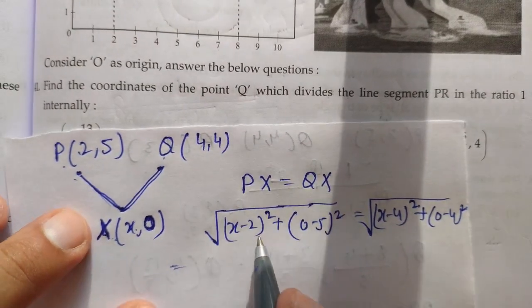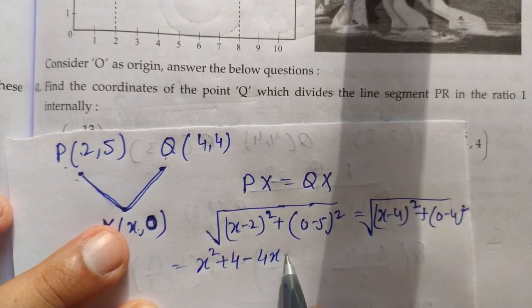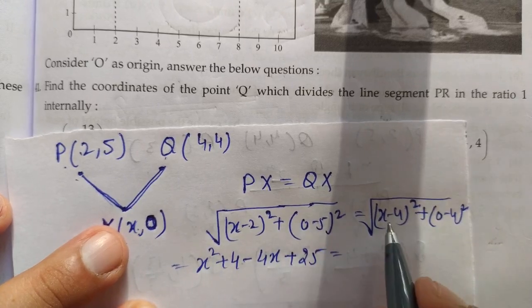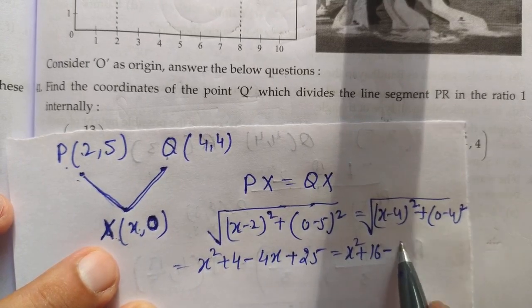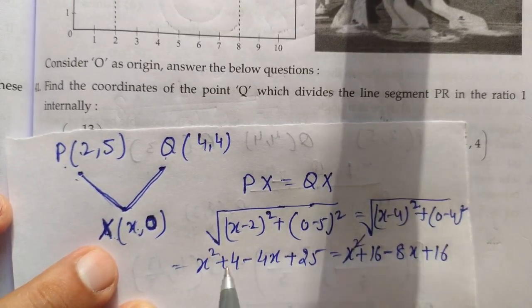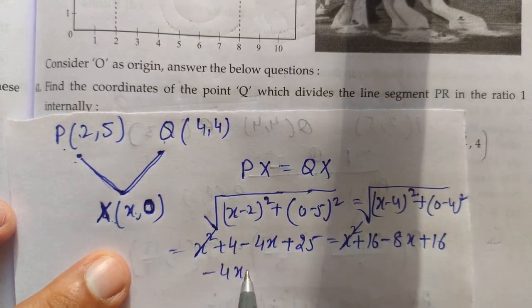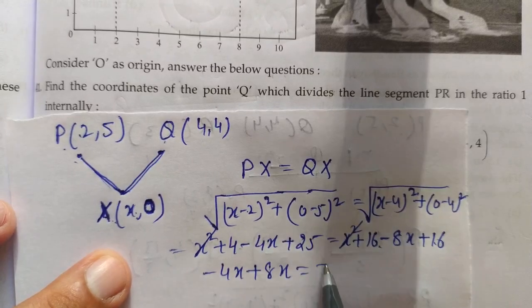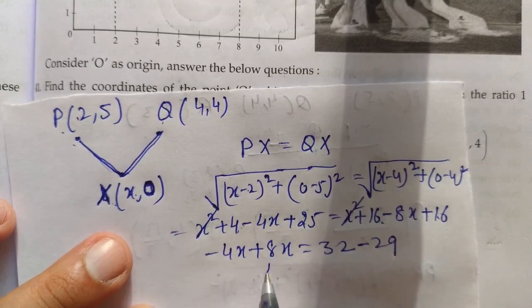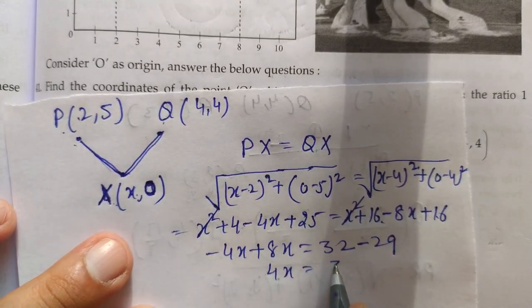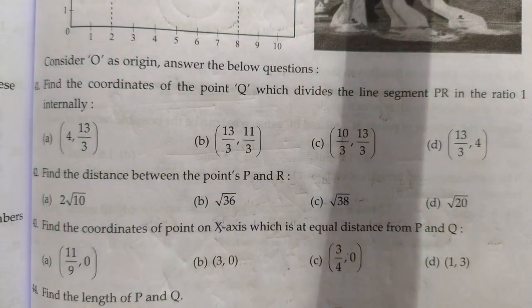After squaring both sides and simplifying: X² − 4X + 4 + 16 = X² − 8X + 16 + 16. This gives 4X = 3, so X = 3/4. The point is (3/4, 0).